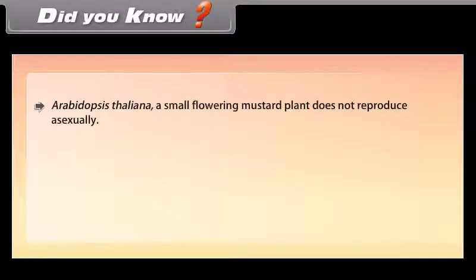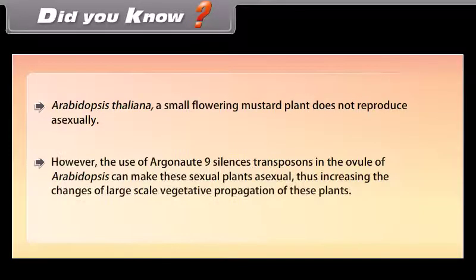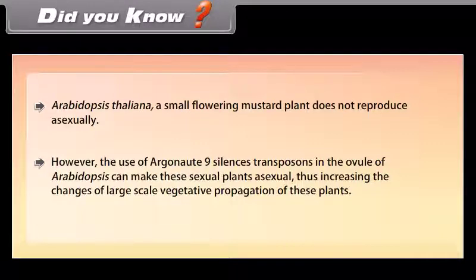Did you know? Arabidopsis thaliana, a small flowering mustard plant, does not reproduce asexually. However, the use of certain transposons in the ovule of Arabidopsis can make these sexual plants asexual, thus increasing the chances of large-scale vegetative propagation of these plants.